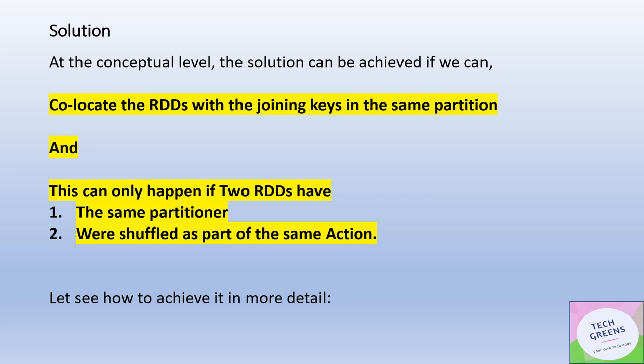To find the solution, you have to go to the conceptual level. Shuffle will not happen in cases where the two partitions of the two RDDs you are trying to join are co-located — they are part of the same partition and on the same node. When the join happens, it will match the corresponding records and Spark doesn't need to shuffle data across nodes. So the solution lies in co-locating the RDDs and their partitions by the joining key, making sure that records with the common key are in the same partition.